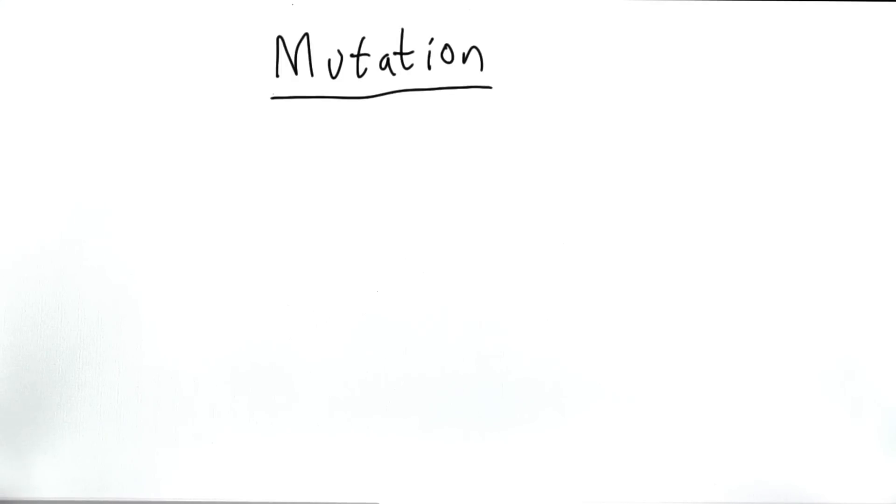The second big difference between lists and strings is that lists support mutation. Mutation sounds a little bit scary, and in some ways it is scary. It makes it much harder to understand what our programs mean, but it's also very powerful. What mutation means is we can change the value of a list after we've created it.